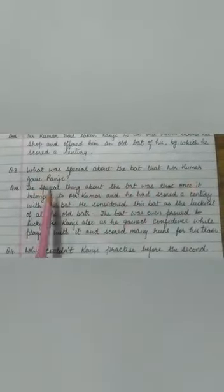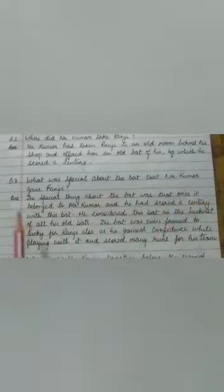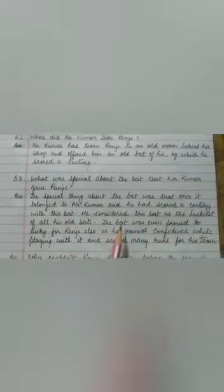Now let us take question number 3. What was special about the bat that Mr. Kumar gave Ranji? Answer is the special thing about the bat was that once it belonged to Mr. Kumar and he had scored a century with this bat. He considered this bat as the luckiest of all his old bats.